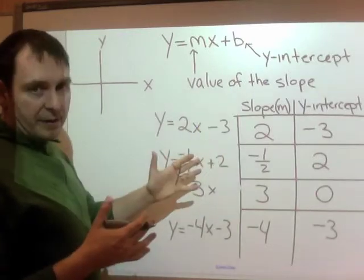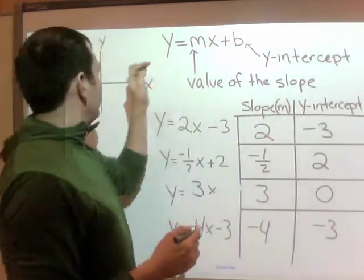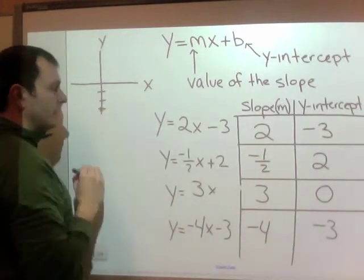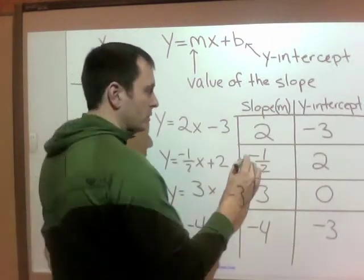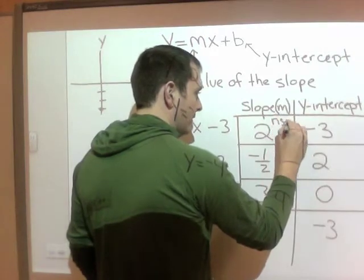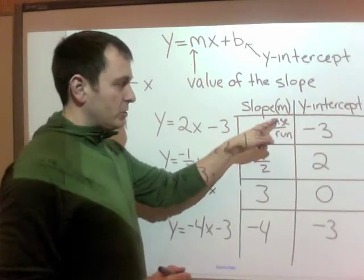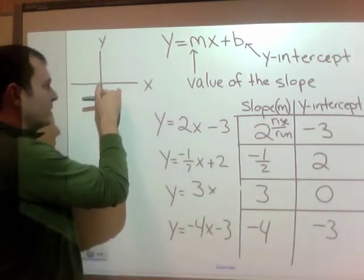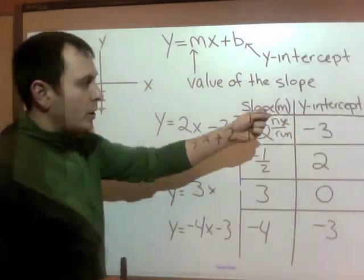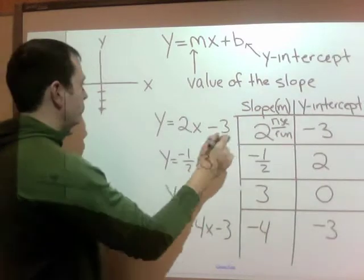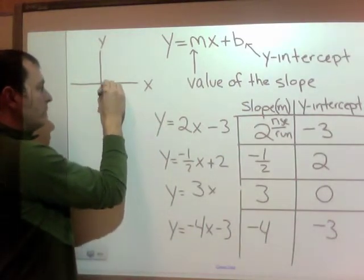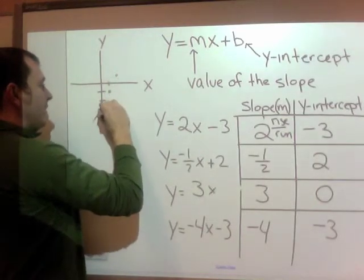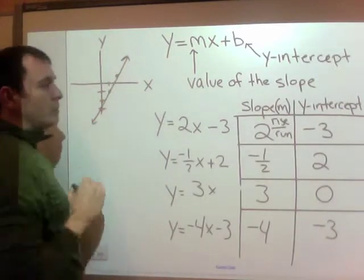So always start graphing by the intercept. The intercept or where it touches the y-axis is negative 3. So it's crossing the y-axis at negative 3, and my slope is 2. And go back to our slope lesson. Slope is rise over run. So it's 2 over 1. It's going up 2 over 1. So from your point. A lot of people like to start back up at 0, 0. Don't. You have to always start from your y intercept. So it's going rise 2, run 1. So from this point it goes up 2 over 1. It goes up 2 over 1. Up 2 over 1. And you will get your line.